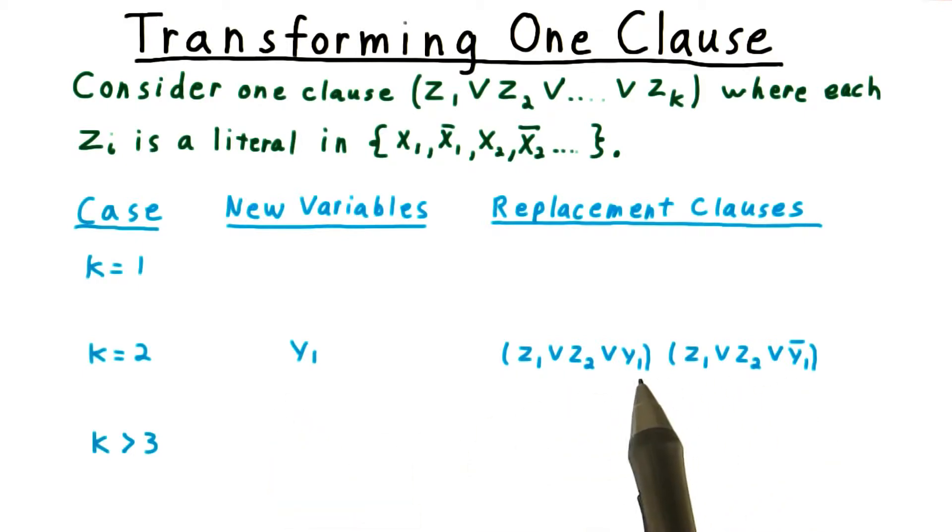One with the literal Y1 and one with the literal Y1 bar. If in a truth assignment Z1 or Z2 is satisfied, then clearly both of these have to be true.